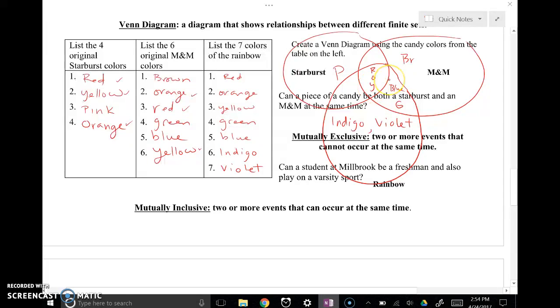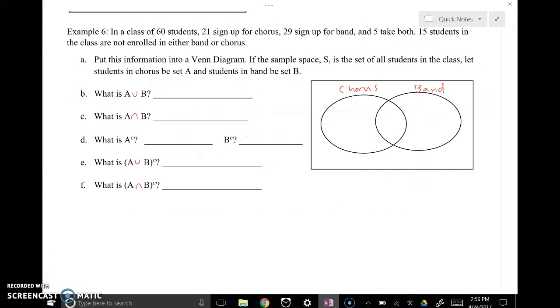Red, orange, yellow would be mutually inclusive for all three events. But pink and a rainbow would be mutually exclusive because it can't be both a Starburst color and a rainbow color. We slid down to example 6. I want you to go ahead and fill out your Venn diagram and compare it to mine. Pause your screen and let's see if you get it right.